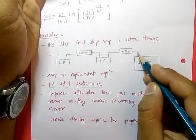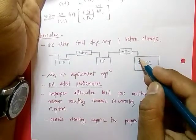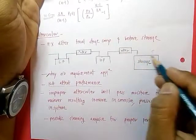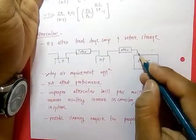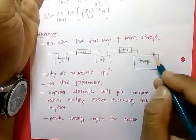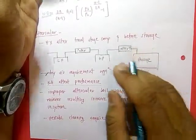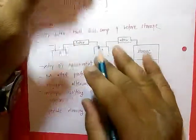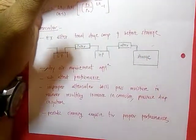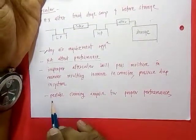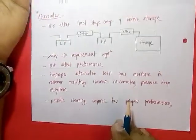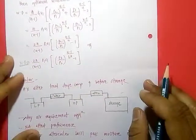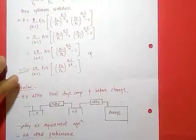If the after cooler is not working properly, there are chances of moist air entering the storage tank. As temperature decreases, this moist air forms water droplets inside the storage tank or in the delivery pipeline. This is responsible for corrosion of the pipe and tank, and it also causes pressure drop because it provides resistance to compressed air flow. Therefore, periodic cleaning is required for proper performance.